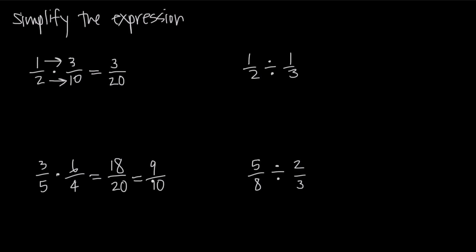So multiplication of fractions is just as simple as that: multiply the numerators together, multiply the denominators together, and reduce the answer if you can. Division of fractions is only slightly more complicated — all we're going to do is turn this into a multiplication problem, and here's how we do it.